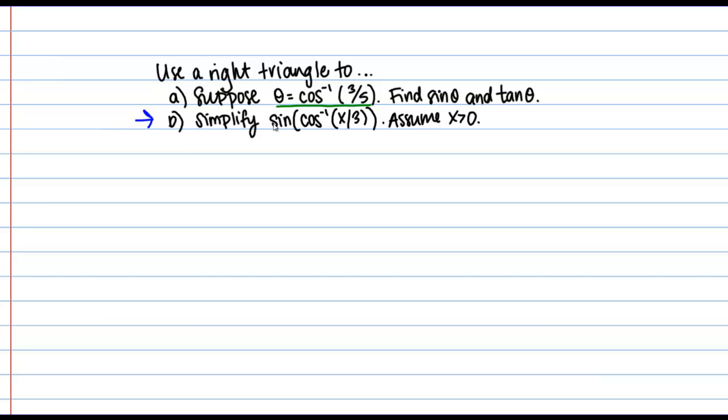In part B we're told to simplify the sine of the inverse cosine of X over 3, and we're going to assume X is greater than 0 here. So this looks kind of complicated. I wouldn't know really how to simplify this just based off the algebraic expression here. But we can actually use a right triangle very similar to the way we did in part A to rewrite this expression.